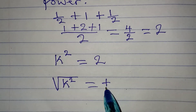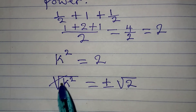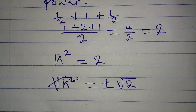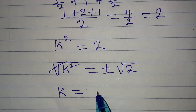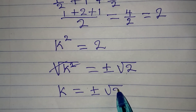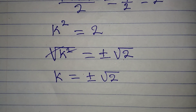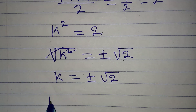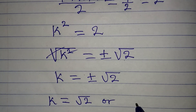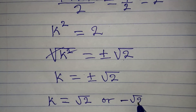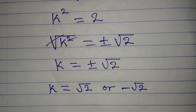...equal to positive or negative square root of 2. The square root and the square cancel each other, and we get k equal to positive or negative square root of 2. So k equals square root of 2 or negative square root of 2.